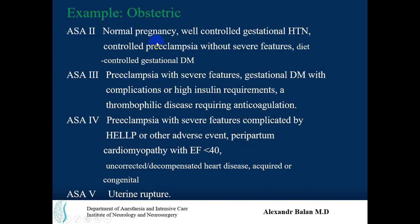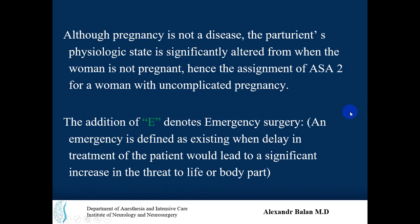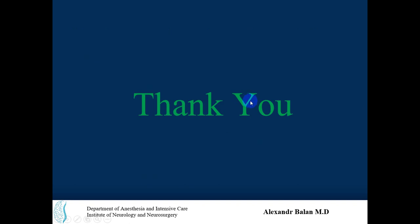Across all populations, the same pattern applies: ASA 2 has some comorbidities or diseases but well-controlled; ASA 3 has severe diseases and complications; ASA 4 has complications and decompensation; ASA 5 is moribund. Pregnancy is not a disease, but the parturient's physiologic state is significantly altered, hence the assignment of ASA 2 for uncomplicated pregnancy. E is added for emergency surgery. Thank you very much, have a good time.